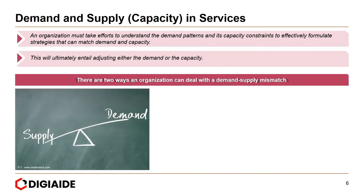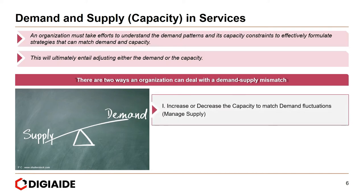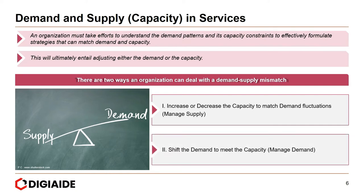There are two ways an organization can deal with a demand-supply mismatch. First, increase or decrease the capacity to match demand fluctuations — that is, managing your supply. Or alternatively, shift the demand to meet the capacity — in this case, you are managing the demand.